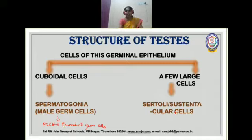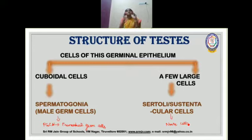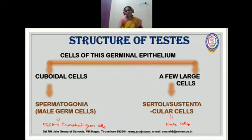These cuboidal cells are called spermatogonia or male germ cells, even referred to as PGCs — primordial germ cells — which are the cells from where sperms are going to be developed. A few large cells are also present, and these large cells are called Sertoli cells or sustentacular cells, commonly referred to as nurse cells. These Sertoli cells act as a source of nutrients for the development of spermatogonia into sperm.